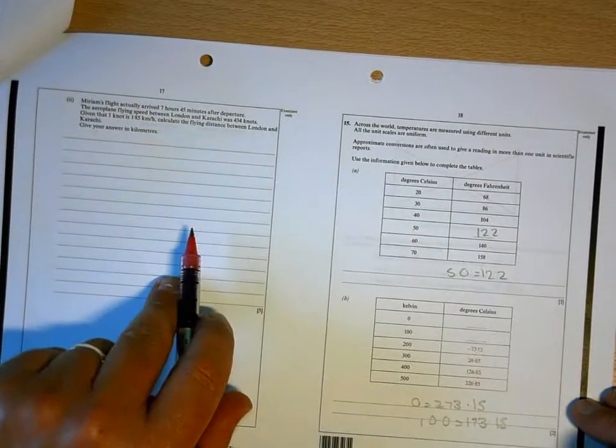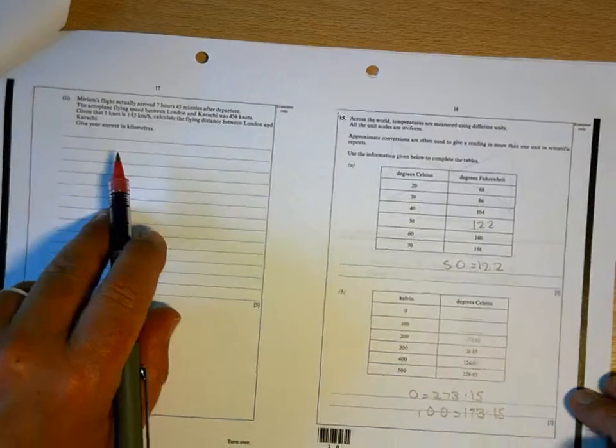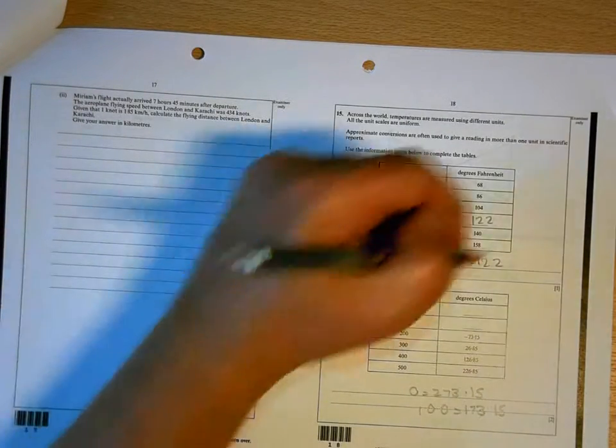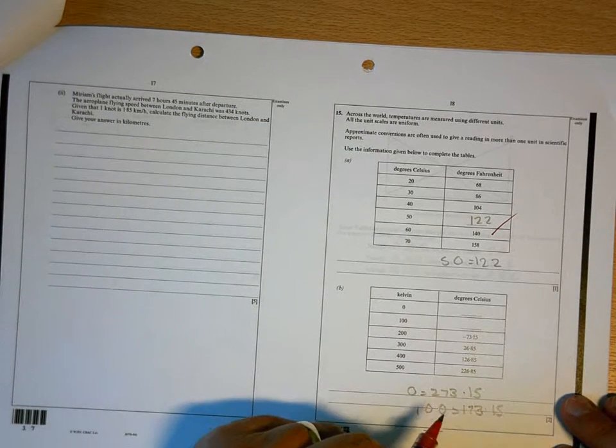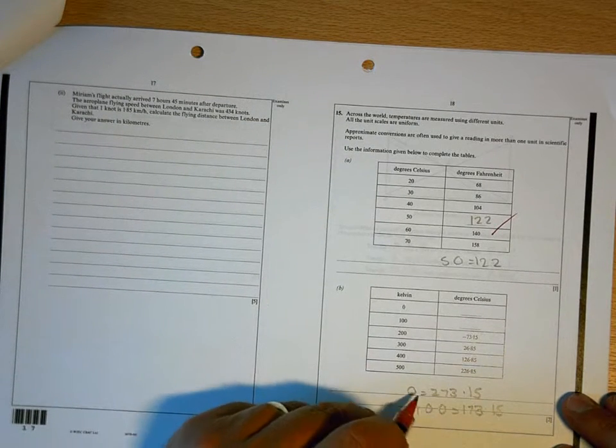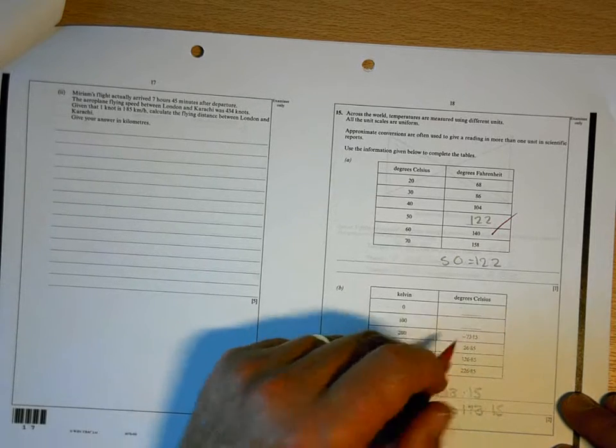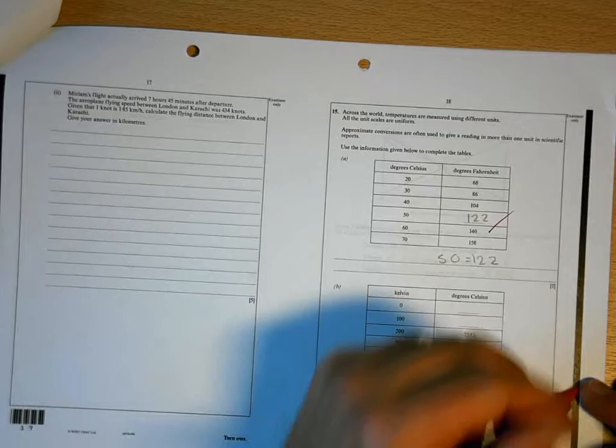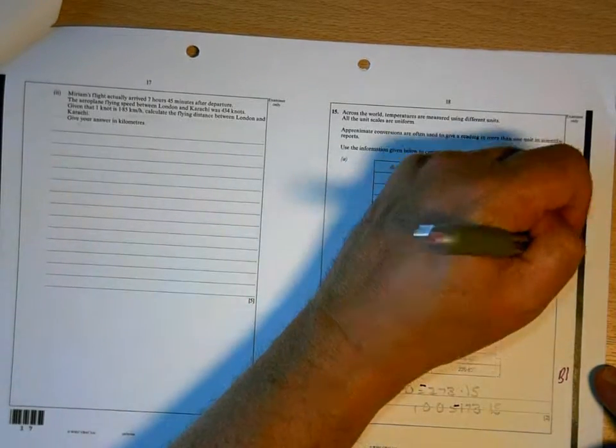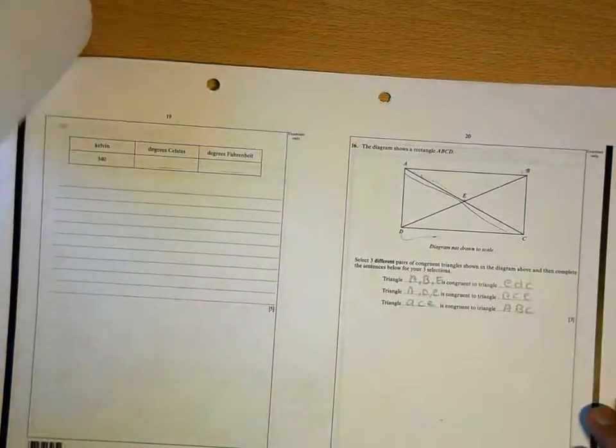This is distance speed time, which you'd have practiced in science, I'm sure. 122 is correct. 173.15 is correct, as is that. You need to put them there, but also you need to realize that they're negative. So you only get one mark there. 2 for the page.